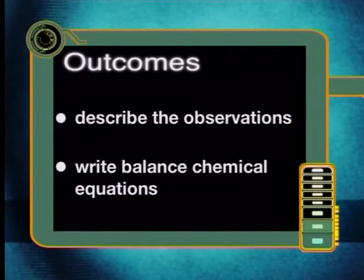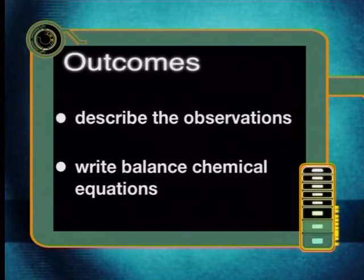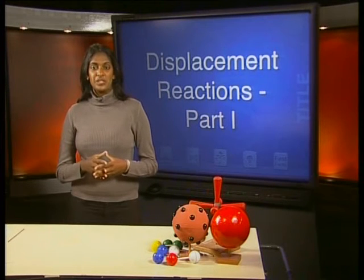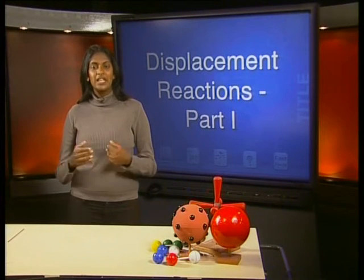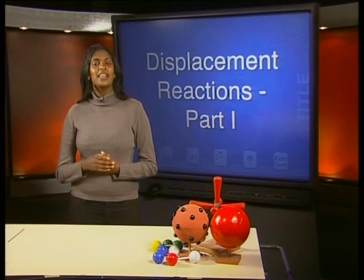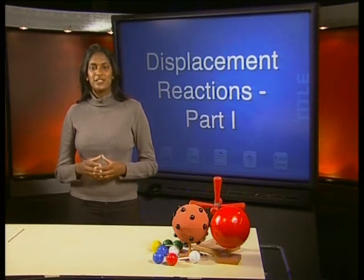By the end of this lesson, you should be able to describe the observations and write balanced chemical equations for the displacement reactions that you see. For the displacement reactions that we will look at during the next two lessons, we will use four metals in their solid form and four solutions of each metal salt.